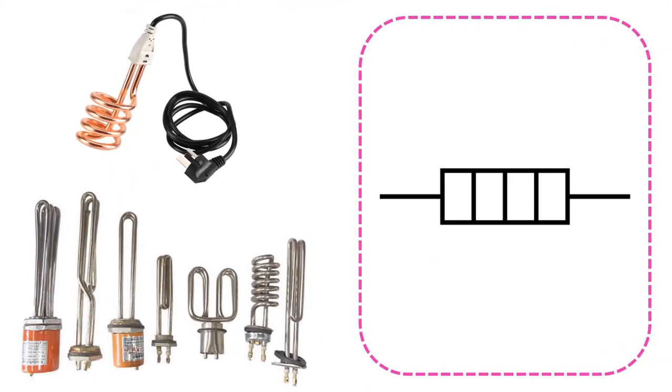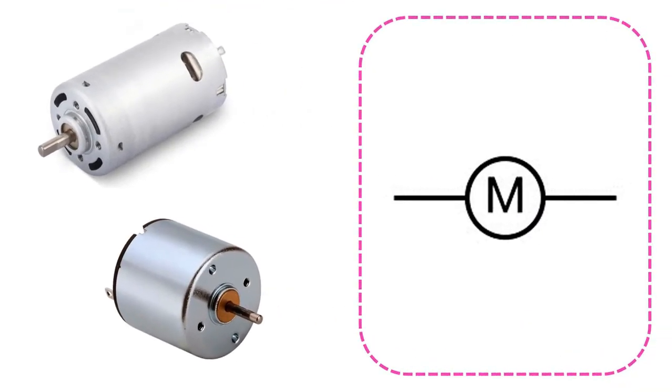This symbol is used for heaters, also known as resistances, used in devices such as kettle that converts electrical energy into heat. If there is a motor in the circuit that converts electrical energy into motion energy, this is indicated by the circuit symbol.